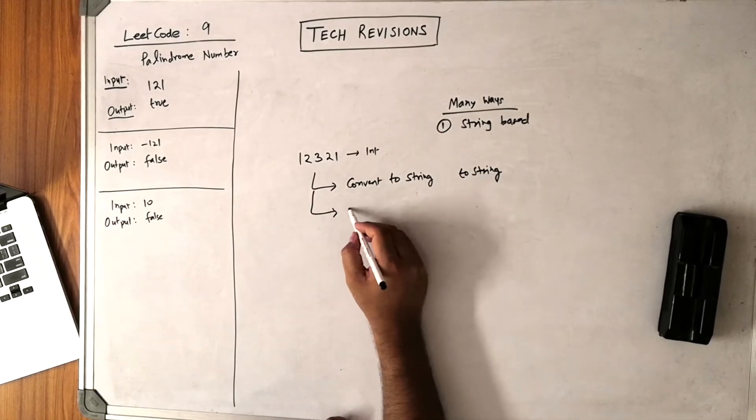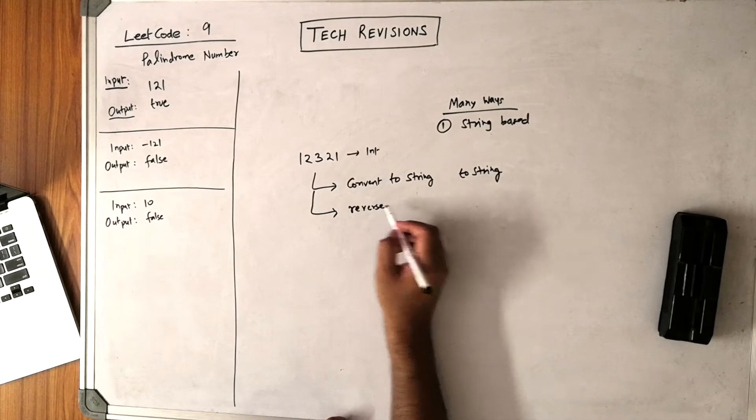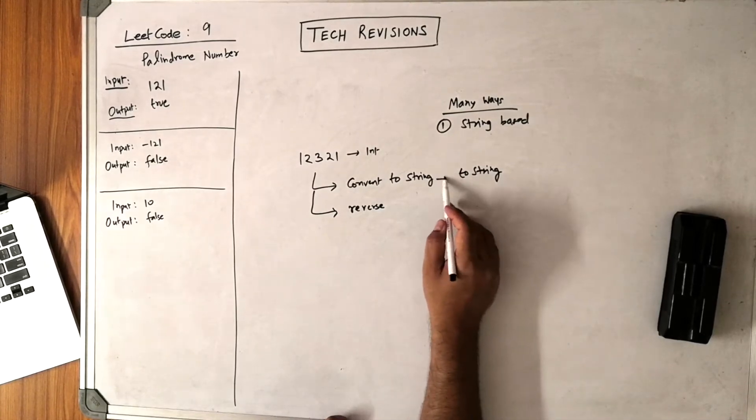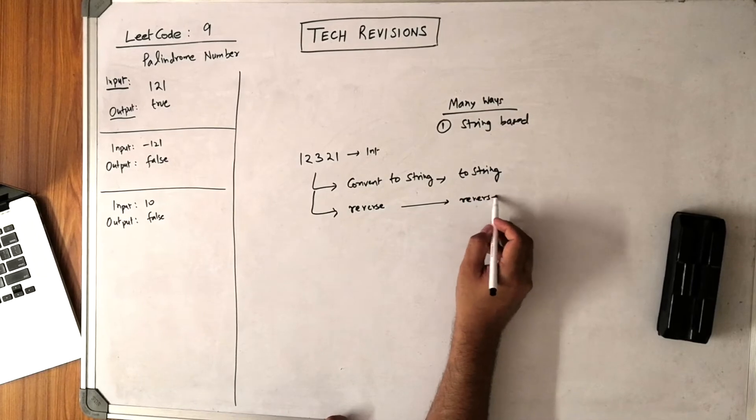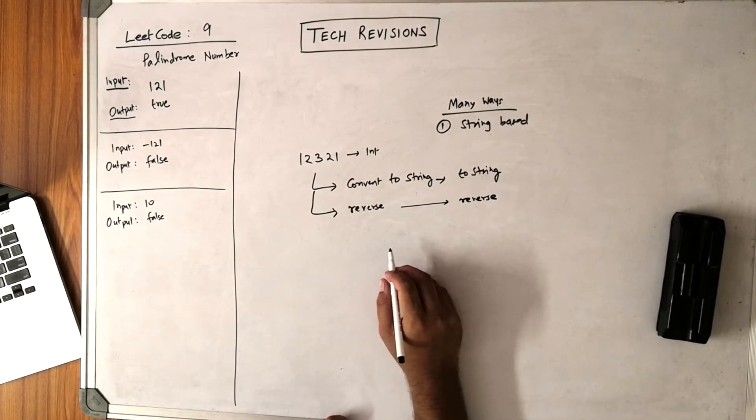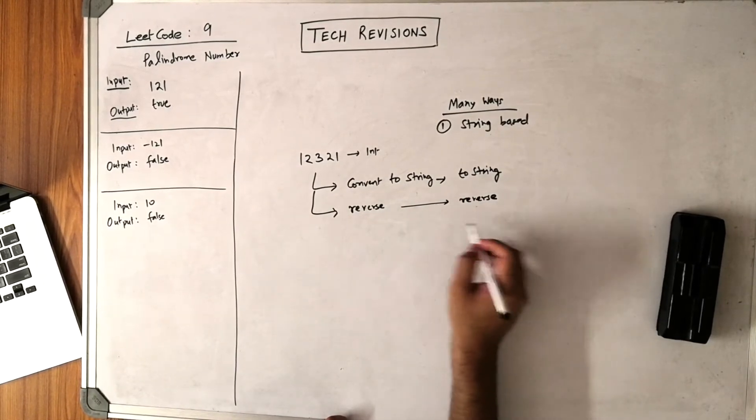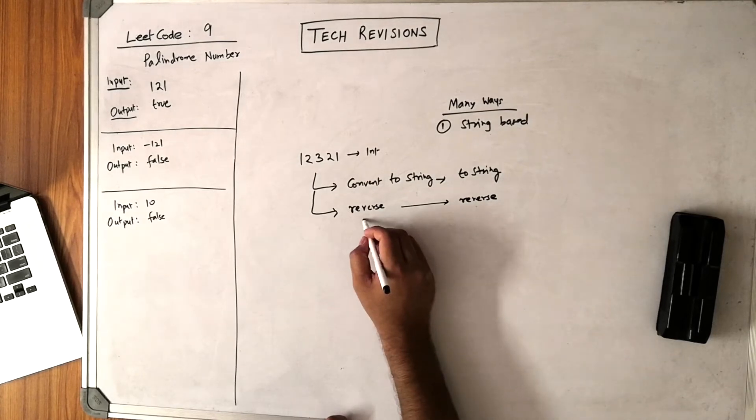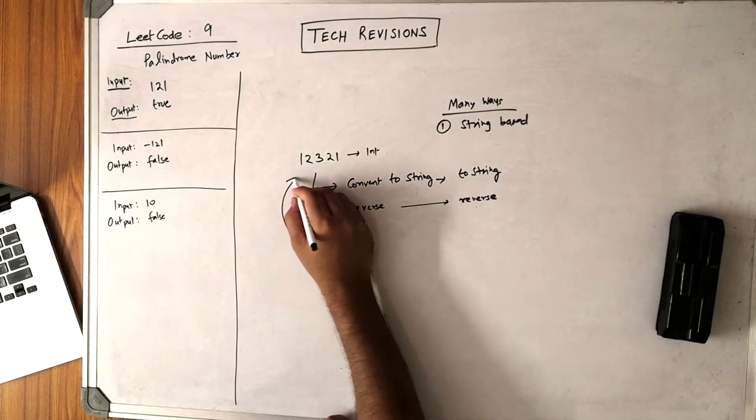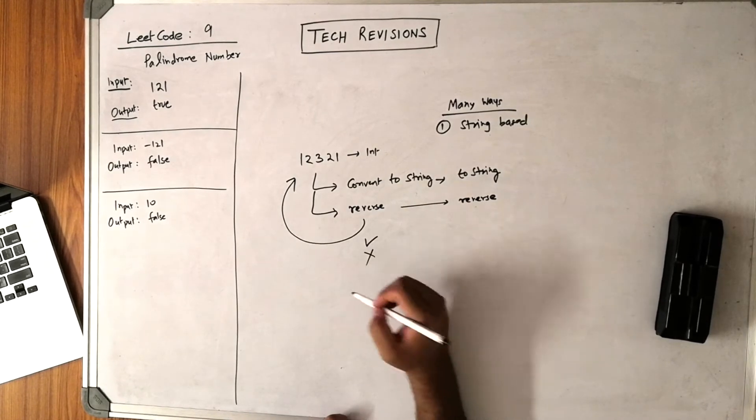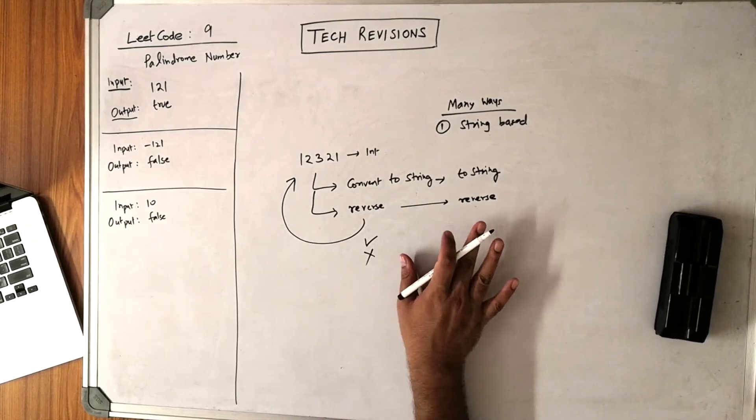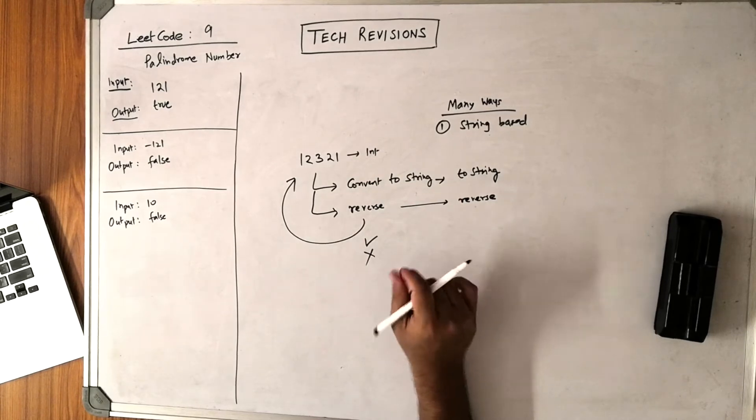The second step is to reverse the string. You can do it by hand one by one, or you could use some function called reverse which is there in the string library. Once you have reversed the string, you can just compare that to the original string. If they are same, then it is a palindrome. If they are not same, it is not a palindrome. This is a string-based approach.